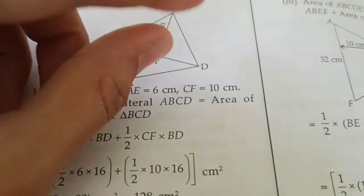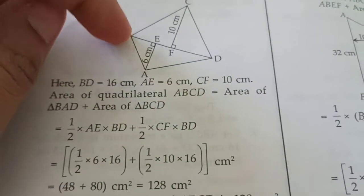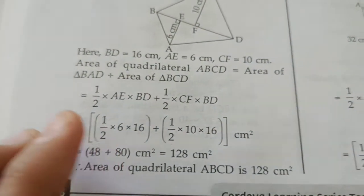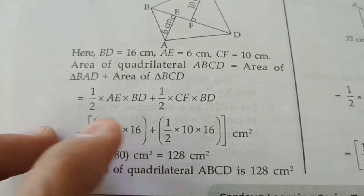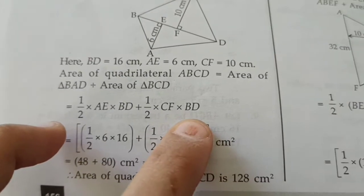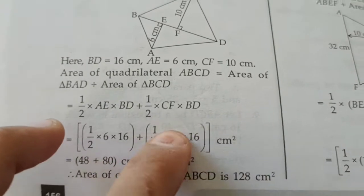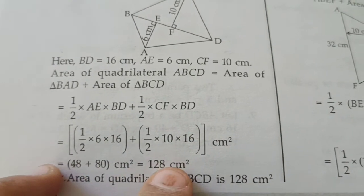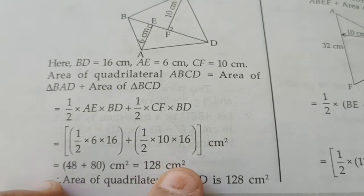A kya diya hai? 6. Base hai 16. Again, this is 10 and base hai 16. So, dono mein BD BD same hai. Fine. So, two threes are 6. Three multiplied by 16 is 48. Two fives are 10. Five multiplied by 16 is 80. 48 plus 80 is equals to 128 cm square.